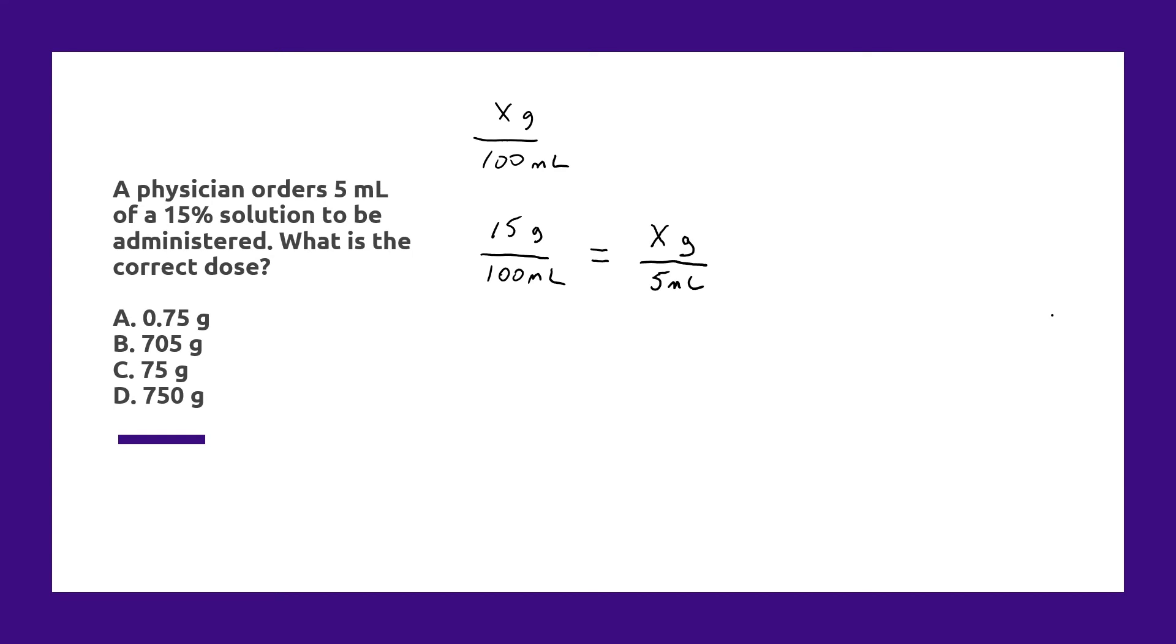Now it just happened to work out this way but remember you always need to match your units on the left hand side. So the left hand side is going to give the known information and we've got grams over milliliters so it matches the right hand side and we're solving for x.